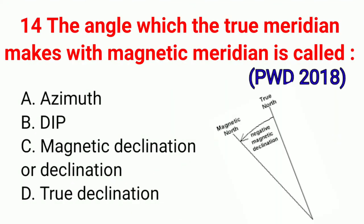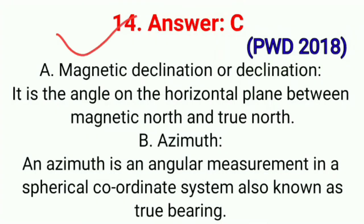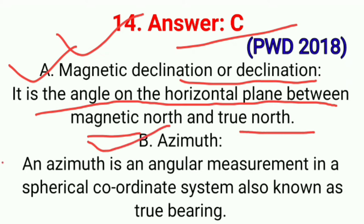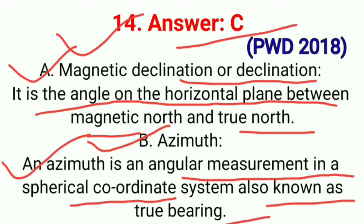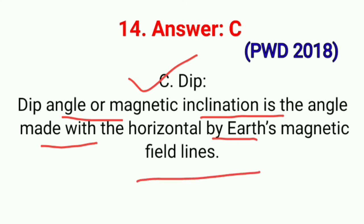Question No. 14. The angle which the true meridian makes with the magnetic meridian is called. Correct option C: Magnetic declination or declination. It is the angle on a horizontal plane between magnetic north and true north. Second, Azimuth — an azimuth is the angular measurement in a spherical coordinate system, also known as true bearing. Third, Dip angle or magnetic inclination — the angle made with the horizontal by earth's magnetic field lines. Correct option C.